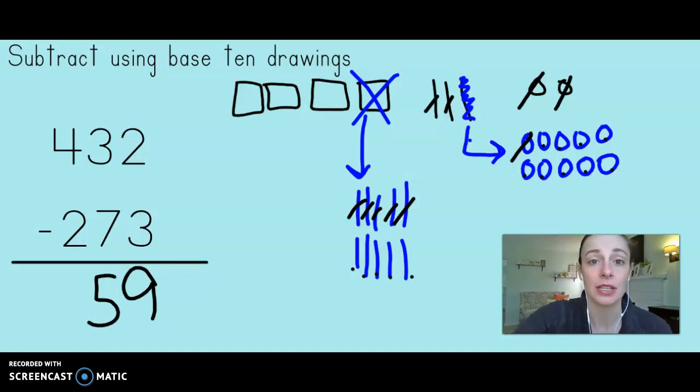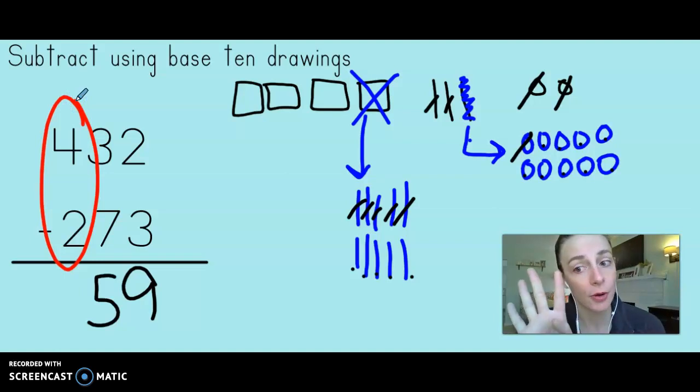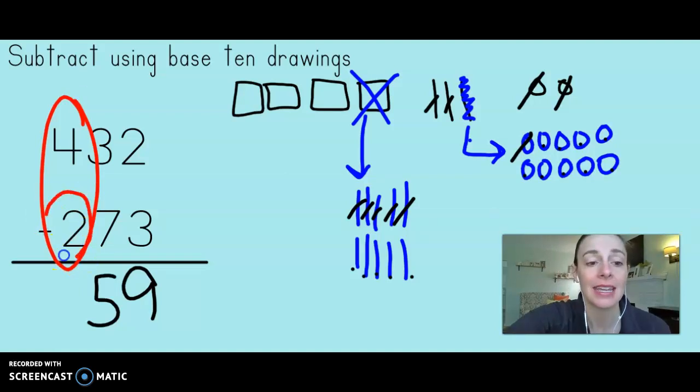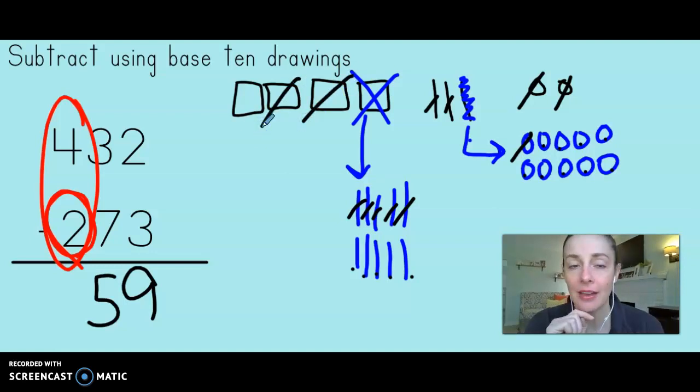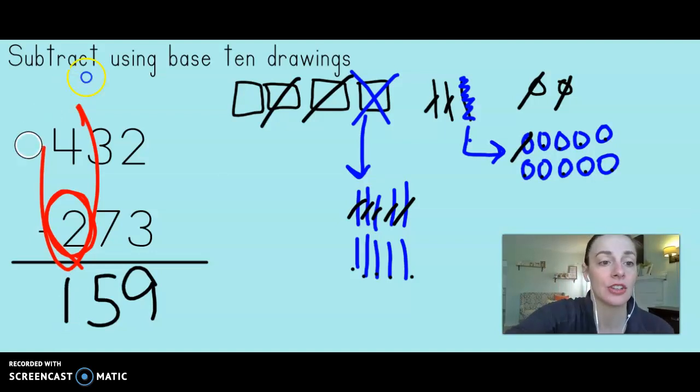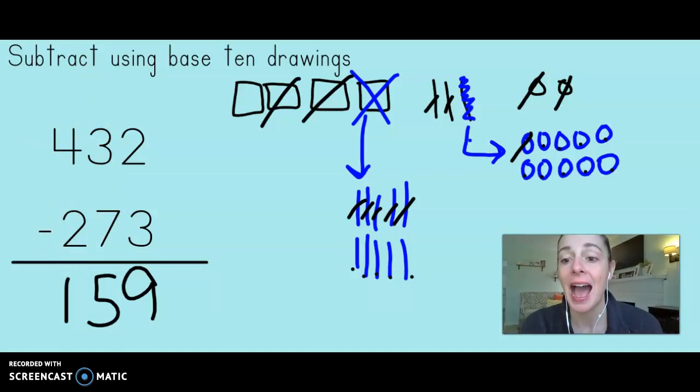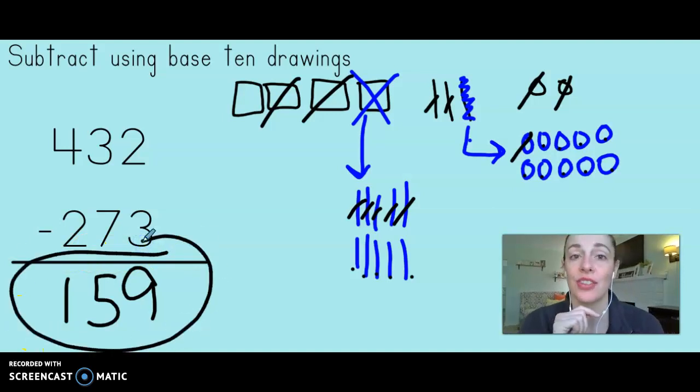Now the last row that we need to worry about are the hundreds. I used to have four hundreds, but I have already ungrouped one of them. And in my problem, it says that I need to subtract two hundreds. So let's cross off two hundreds. One, two. How many hundreds do I have left? Just one. So I have 100 left. So using our base ten drawings, I got the answer of 159.